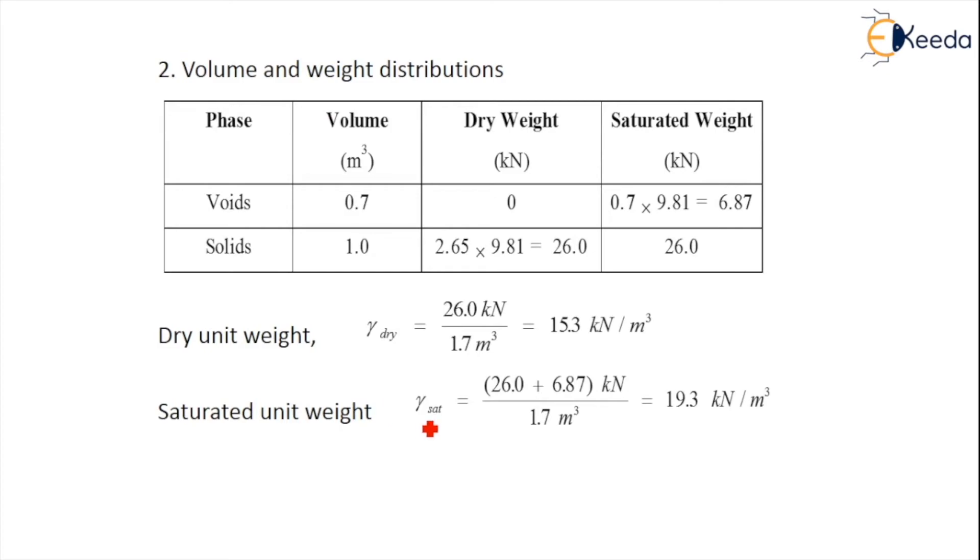Saturated unit weight gamma sat is calculated by taking the saturated weights of the voids and solids respectively. So it is 26 plus 6.87 by total volume, total volume is 1.7, 1 plus 0.7. After calculation we get it as 19.3 kilonewtons per meter cube. Thank you.